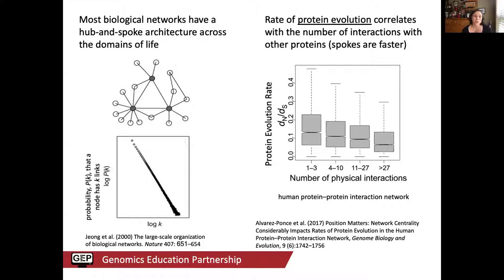When we start talking about structures in biological systems, we can think about networks, which have been studied in many contexts including biological. A pattern emerging consistently is that networks tend to have a hub-and-spoke architecture — a few nodes with high connectivity (the hubs) and many nodes with low connectivity, the spokes, connected in most cases to only one other node. This architecture seems consistent across biological networks.